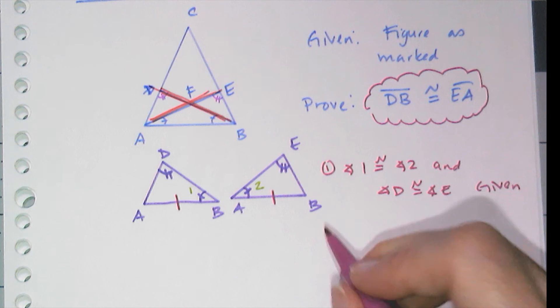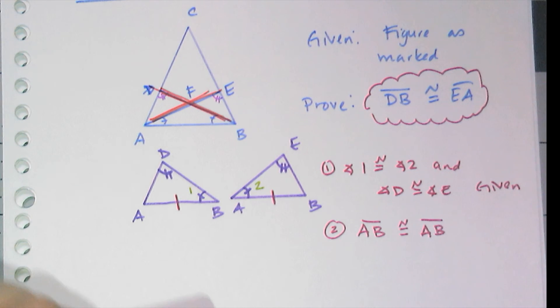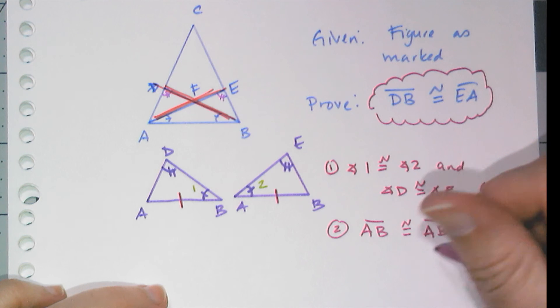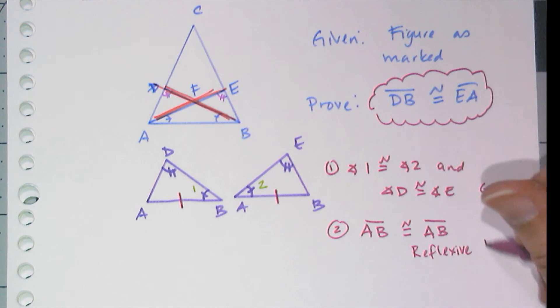My second line of my proof is that AB is equal—or congruent, sorry—to AB, and you're like, yes, that's obvious, it is congruent to itself. This is called the reflexive property. It is a property of equality that we use in geometry. We don't really use that much in algebra 1 because we don't say like 4 equals 4—we don't really need that. We do need it in geometry though.